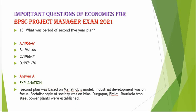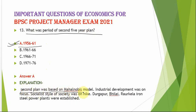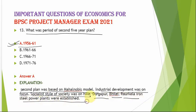The next question is: what was the period of the Second Five Year Plan? The correct option is option B — 1956 to 1961. The Second Five Year Plan was based on the Mahalanobis model. Industrial development was on focus and a socialist style of society was emphasized. Durgapur, Bhilai, and Rourkela iron and steel plants were established under the Second Five Year Plan.